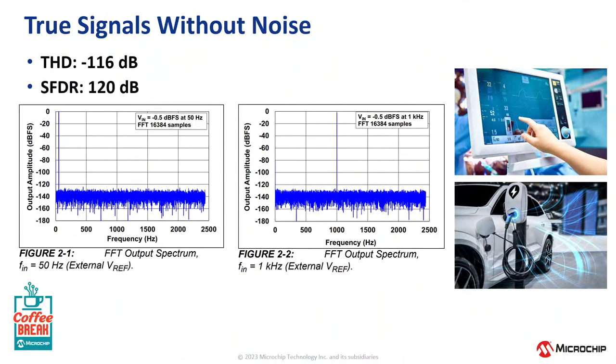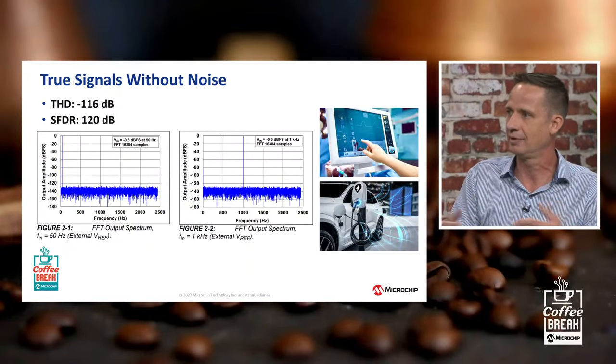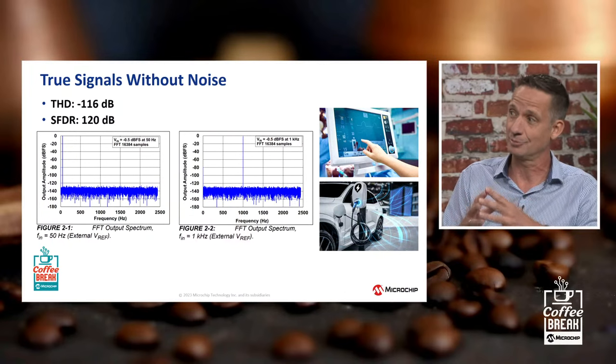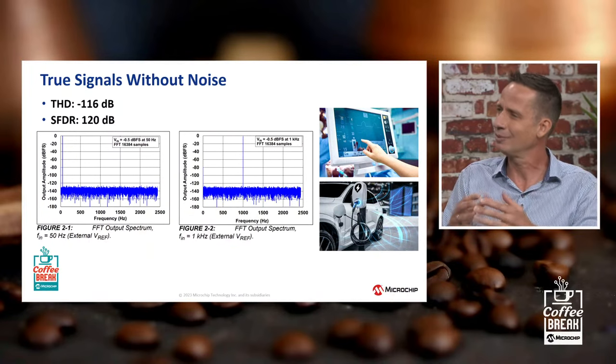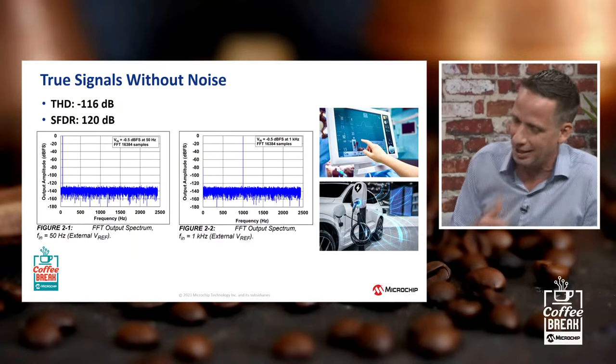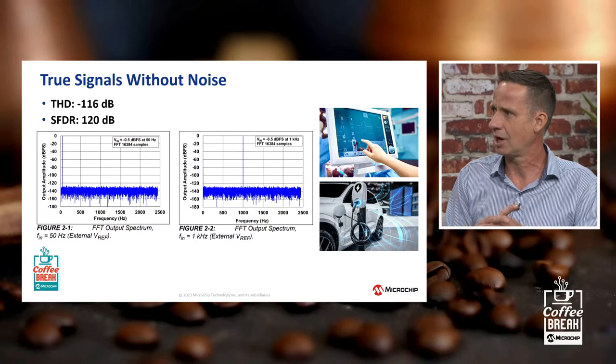The other area is noise. We also want to make sure our noise is low — no spurious frequency components coming in from the Delta Sigma ADC architecture. We have a term called spurious free dynamic range, which is as high as 120 dB — really great performance. We achieve this through a patented technology that uses a type of multi-level feedback in our delta sigma modulators, giving us really good spurious free dynamic range and low distortion numbers.